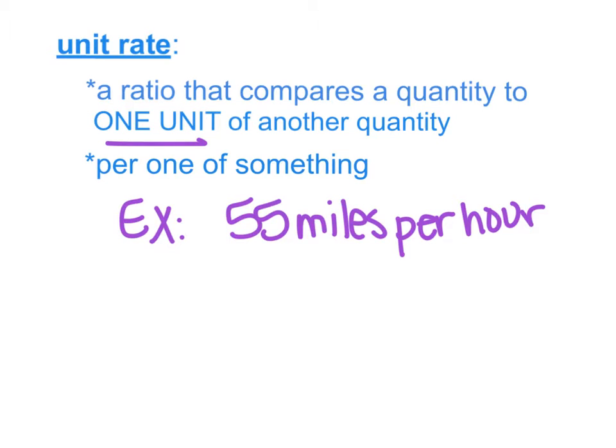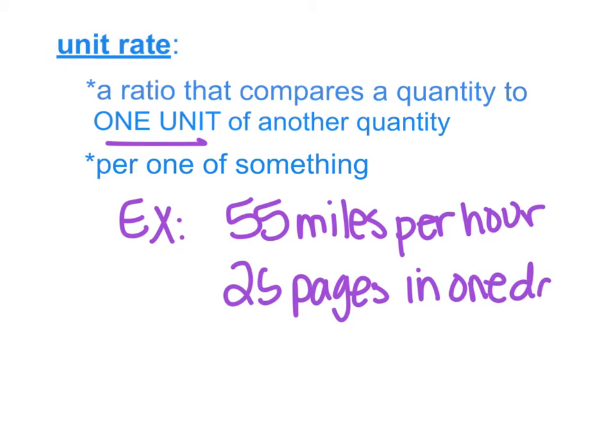Or you could say I read 25 pages in one day. Again, when you're talking about one of something, you're talking about a unit rate. 25 pages in one day. You might also go to the grocery store and buy some grapes and say they are $2.19 for one pound. Again, that's $2.19 per pound or $2.19 for one pound of something.